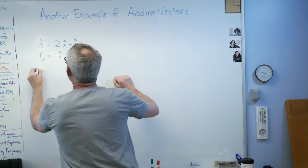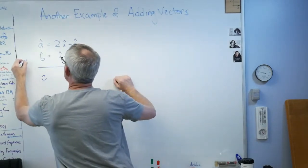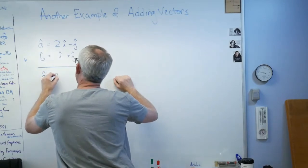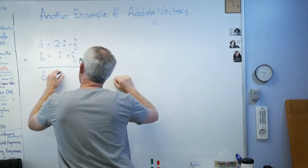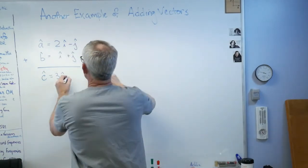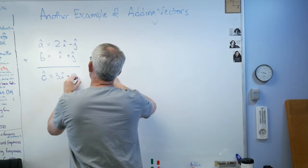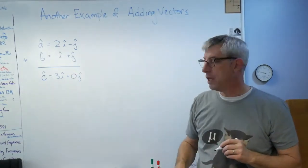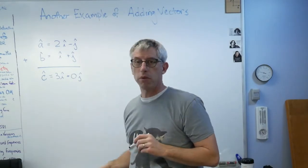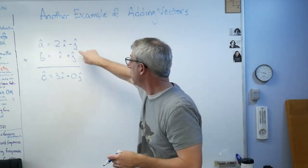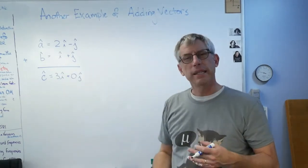Can I do that? Sure, I'll put a plus out there. So I'm going to get 3î minus ĵ plus ĵ, which is plus 0ĵ. So if I do this right, ĉ is now a vector that has a magnitude of 3 and is parallel to the x-axis, even though neither one of those original vectors were.